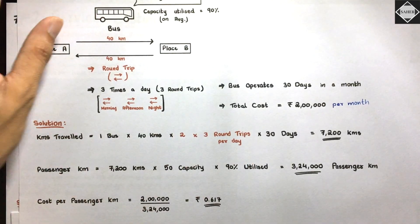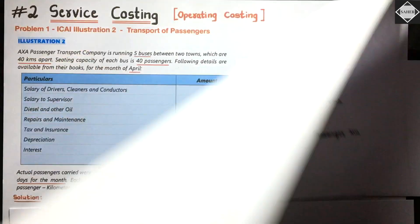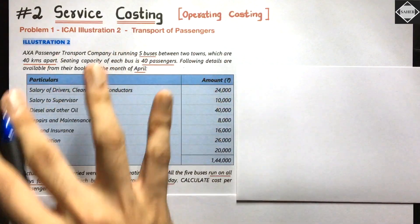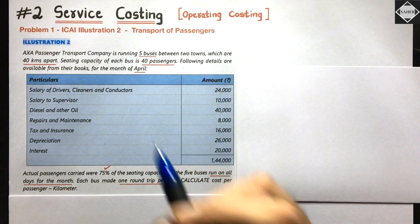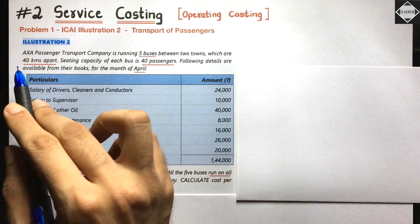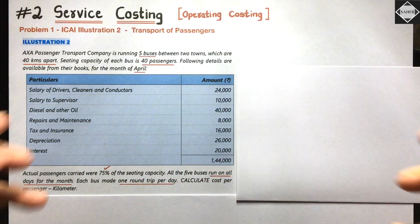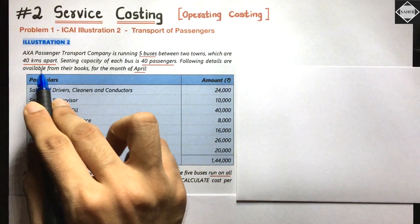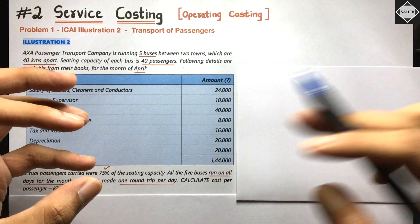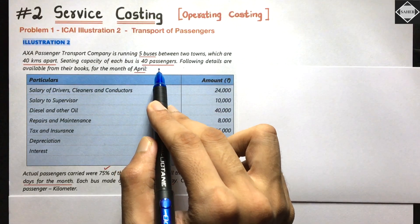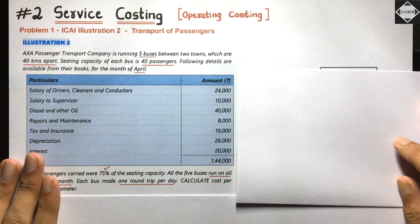Now let's get to the second video and solve the simple problem. Here is the question - ICAI study material Illustration 2. AXA Passenger Transport Company is running five buses between two towns which are 40 kilometers apart. The seating capacity of each bus is 40 passengers.